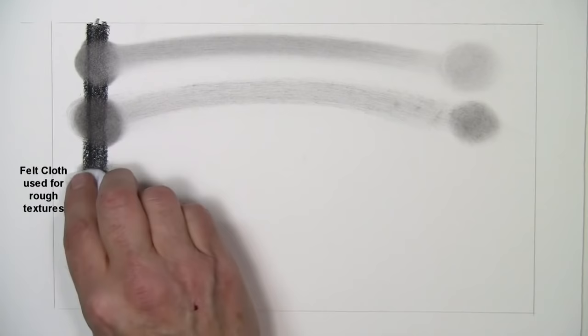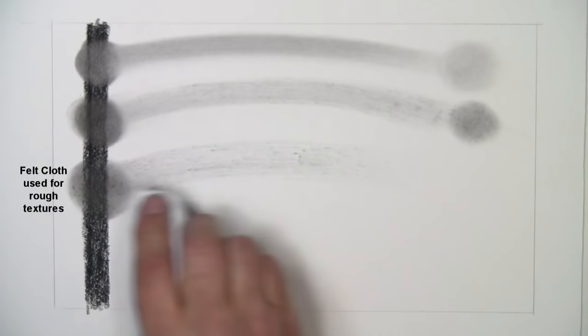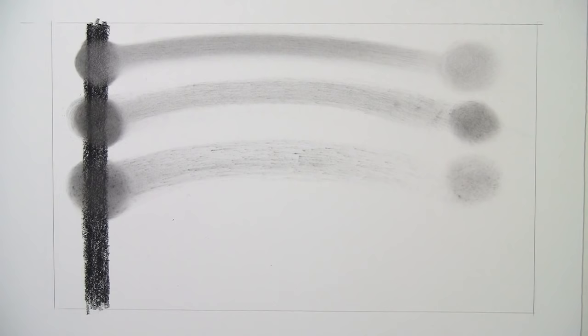And with all of these blending materials, going over them with a different blender will create a slightly different texture. For instance, if I go over any of these with a stump or a tortillion afterwards or before, it creates something different than just using one particular blender. There are many combinations you can use. This one creates lots of little dots and dashes that can be manipulated into creating really interesting textures.